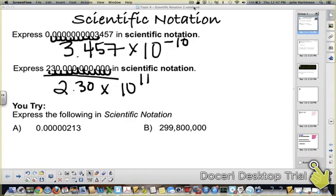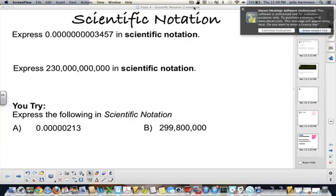Okay, those are you tries. I'm not going to do them. You're going to try those. Basically, keep in mind, you just find the first number. So here's 2. Put your decimal place after that, and then count. If it's a number smaller, it's going to be to a negative power. If it's a number bigger, such as this one, it's going to be to a positive power. Take a minute and do those, and I will go to the next page.